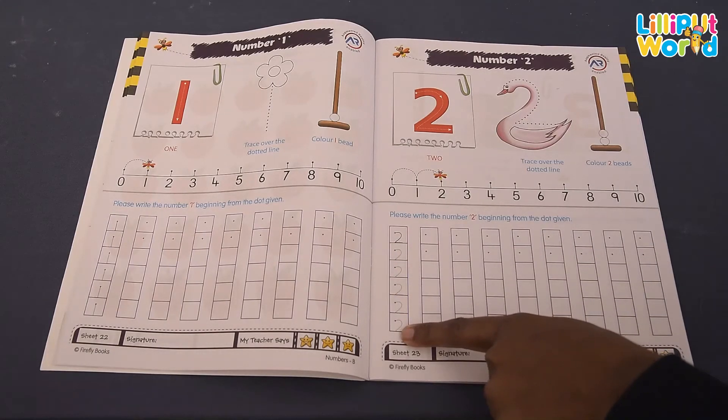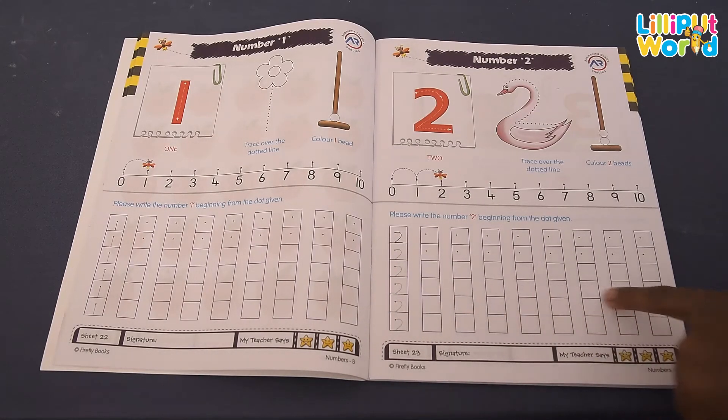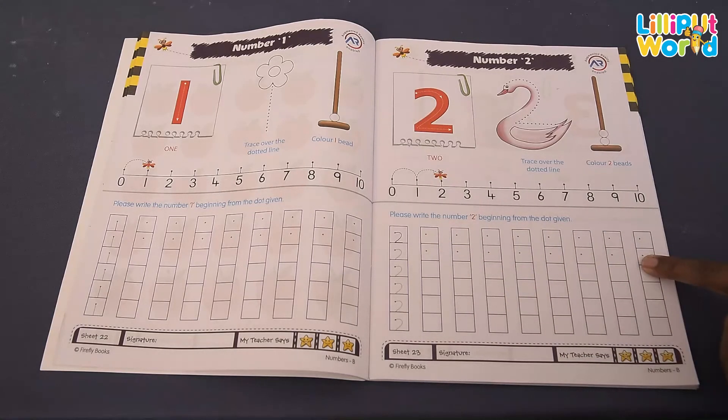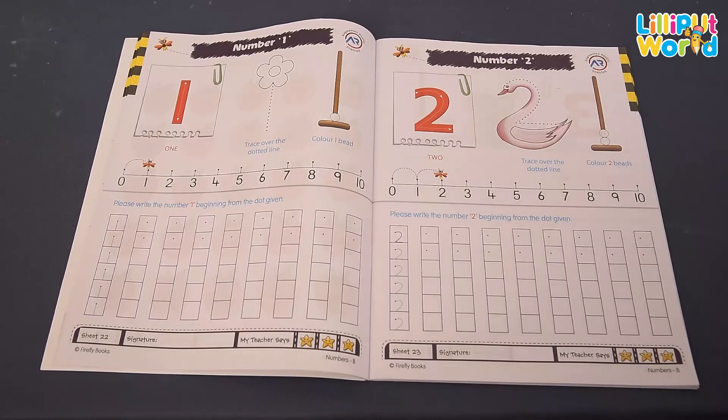First line you have to complete by tracing and then rest of the line where they have given the dot, you have to write there properly and complete rest of the line properly, okay? By using small pencil with mama and dada, okay? Thank you.